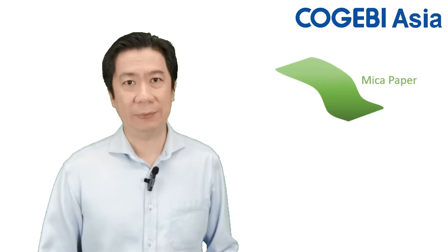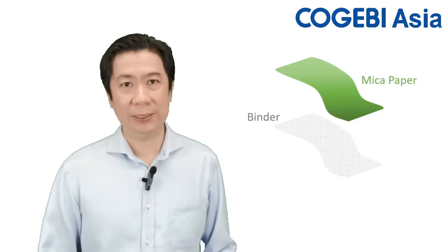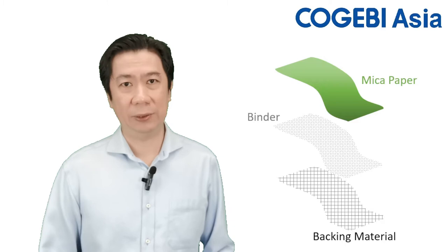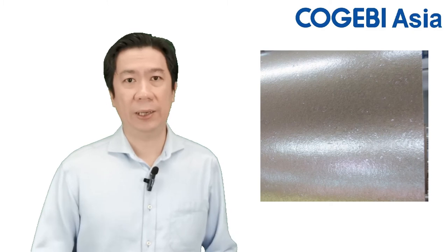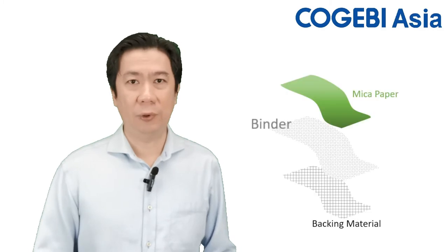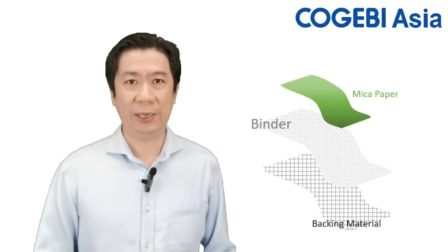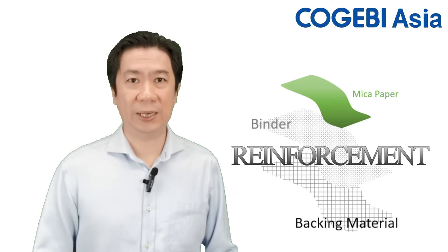Firstly, it's the mica paper. Second is a binder. And the third is a backing material. Mica paper in itself is very weak — the mica flakes are bounded together by Van der Waals force alone. Due to this, it needs two other components, which are the binder and backing material, to reinforce it so that it is mechanically strong.